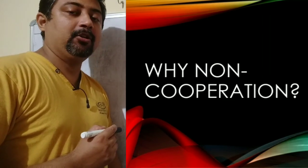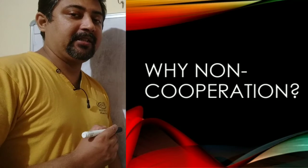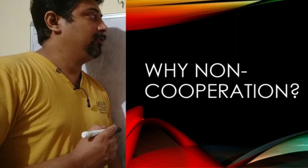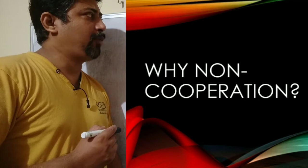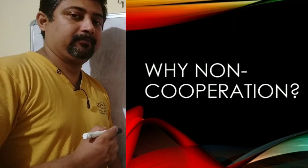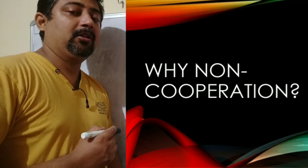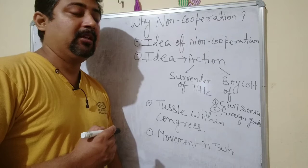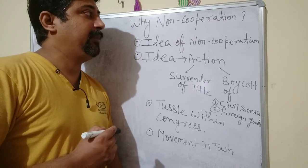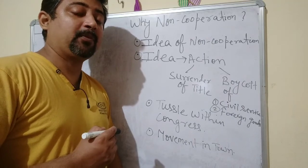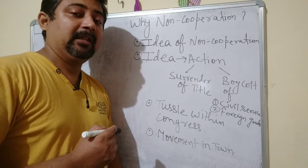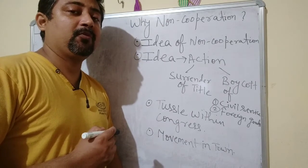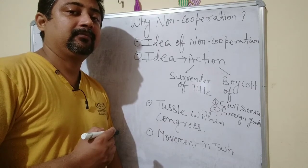Good morning students. This is the third video of the chapter 'Nationalism in India' for class 10th. In this video we are going to discuss the sub-topic: why non-cooperation, or why the program of non-cooperation was adopted by Gandhiji. We already discussed that Gandhiji convinced many Congress leaders about this program and later on he got success also.